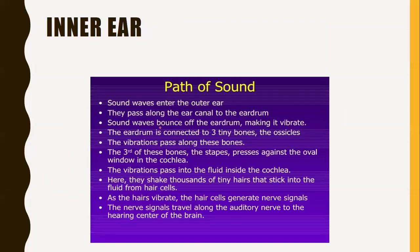The inner ear mainly has the function of hearing as well as balance. The pathway of sound waves: sound waves enter the outer ear and pass along the ear canal to the eardrum. Sound waves bounce off the eardrum making it vibrate. The eardrum is connected to the three tiny ossicles - malleus, incus, stapes - and vibrations pass along these bones mechanically. The stapes presses against the oval window in the cochlea. The vibrations pass into the fluid inside the cochlea, where they shake thousands of tiny hair cells. As the hairs vibrate, the hair cells generate nerve signals that travel along the auditory nerve to the hearing center of the brain.